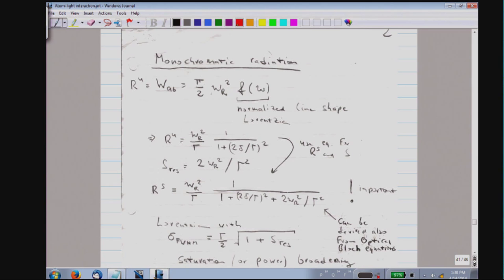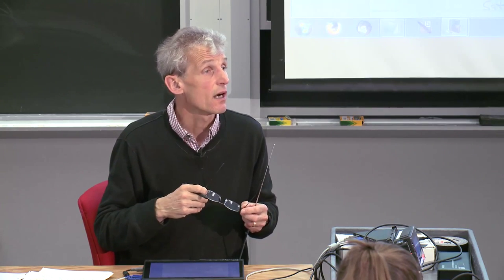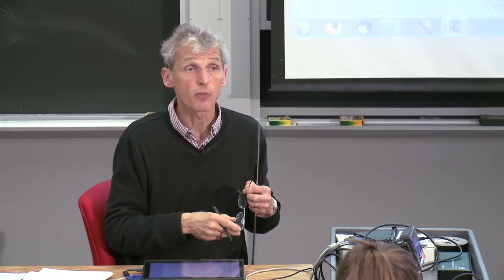One thing to mention: for the classroom discussion I assumed the light-atom interaction is described by Fermi's golden rule, which is a limitation when driving the system coherently. The optical Bloch equations, which you will use in the homework assignment, really include the transition from Rabi oscillation toward Fermi's golden rule. I'm just considering this one limiting case.